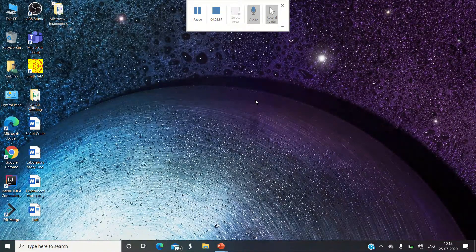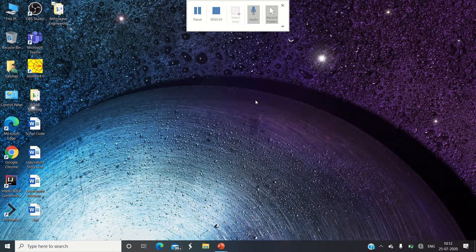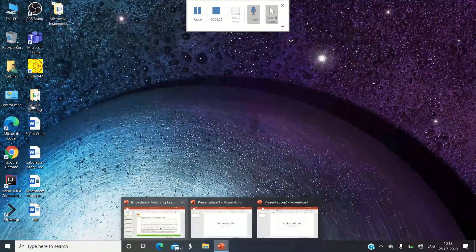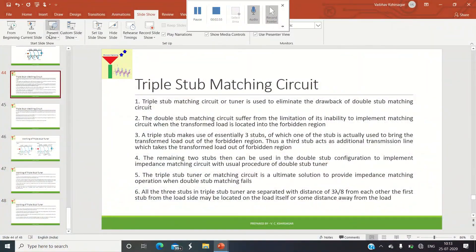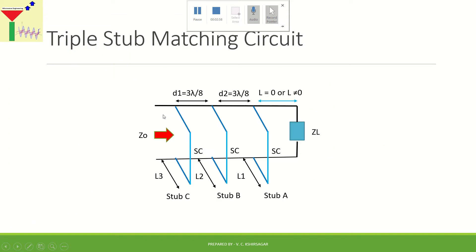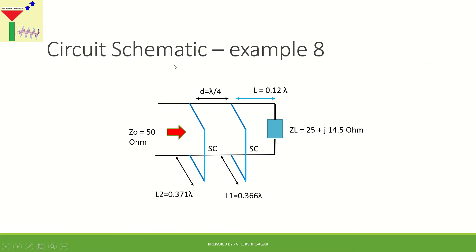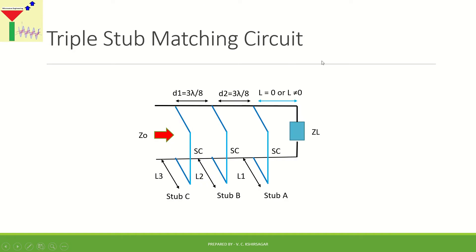In order to overcome this drawback of the double stub tuner, we go one step ahead. The solution is provided by the triple stub circuit. In this lecture we will briefly describe what the triple stub tuner circuit is. Here on the slide is a typical configuration of a triple stub matching circuit — let us study in detail what it consists of.